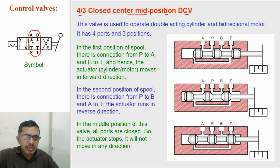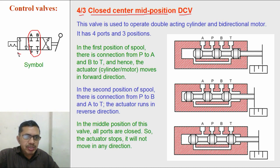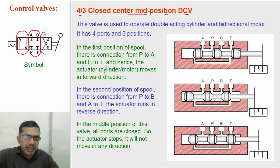In this middle position A, B, and T are all closed. In the first position there is connection from P to A and B to T. In the second position there is connection from P to B and A to T, and in the middle position all ports are closed.